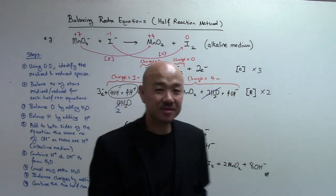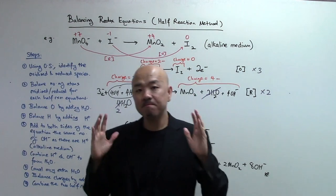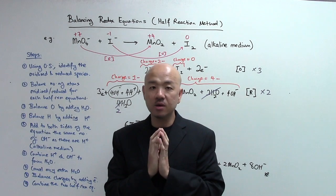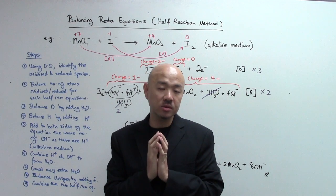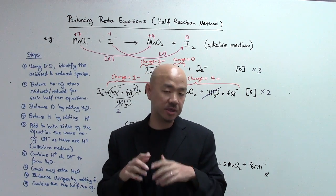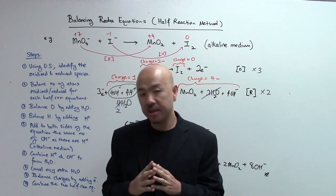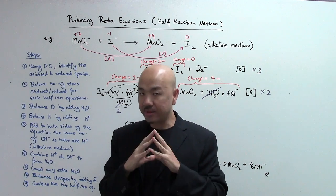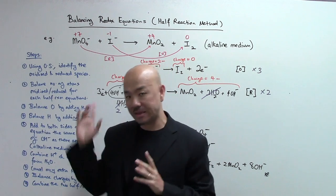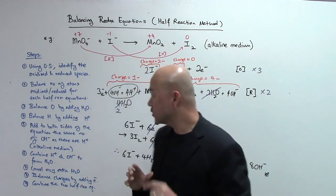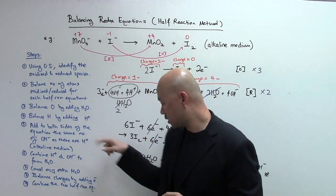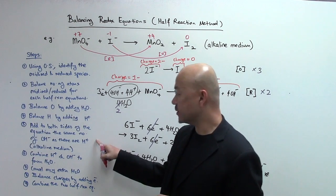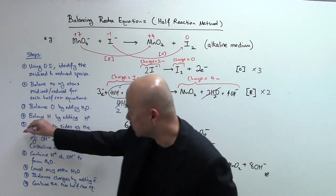So when you want to balance your redox equation using the half reaction method, and if it's in alkaline medium like this case, do remember step number 5 — always add OH- to both the left and right sides of the half equation.